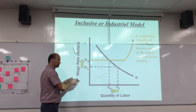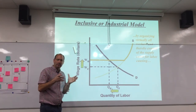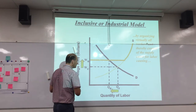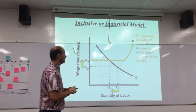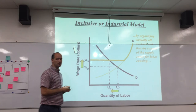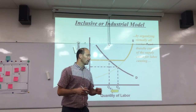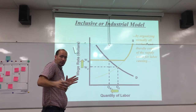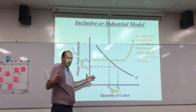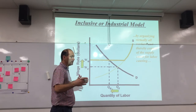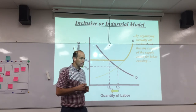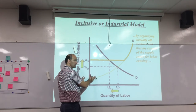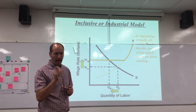Whereas that's the exclusive model, this is the inclusive model. This is the kind of union you probably think of when you think of unions — like the American Steelworkers or the United Auto Workers. These are industrial or inclusive unions. What they try to do is get everybody in the union. Whereas in the exclusive model you're trying to exclude people from the profession, here you're trying to get everybody in the profession into the union. Then they bargain collectively, and the power comes from the threat to strike.